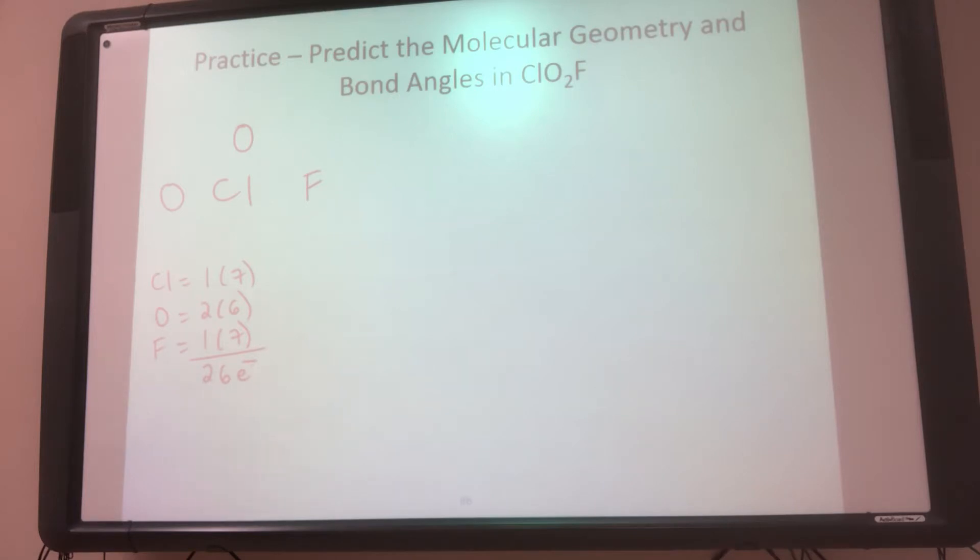I make single bonds, so that's 3 single bonds, so that's 6 electrons. So 20 left. Outside in, oxygen has 2. He wants 8, so he needs 6 more. That's the same for the other oxygen. And the fluorine wants 8, has 2, so he wants 6 more.